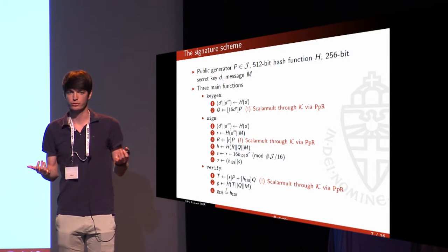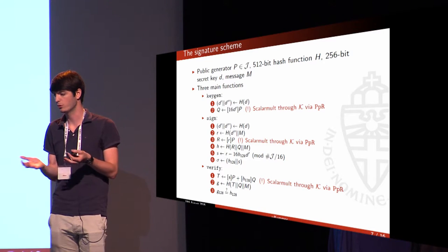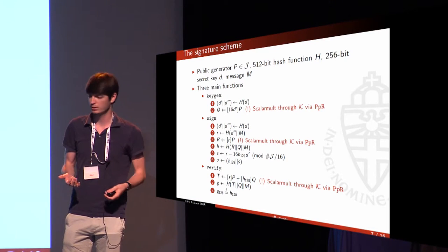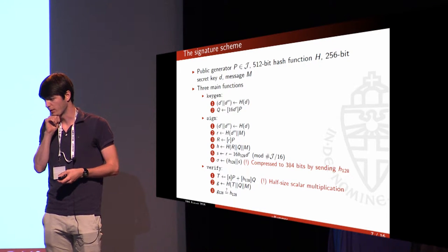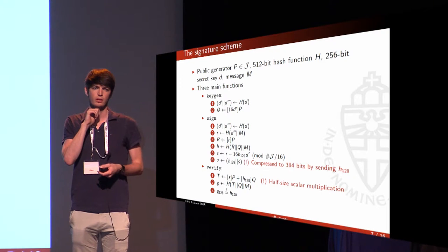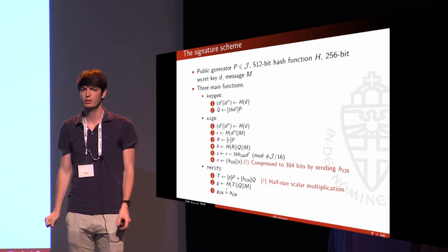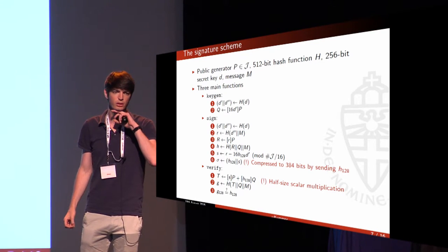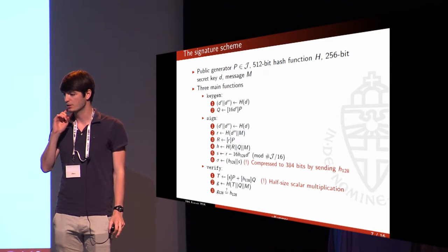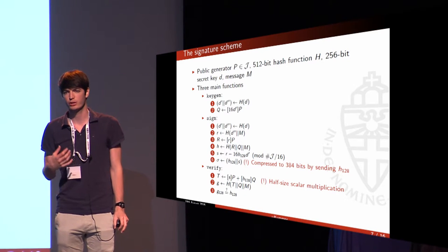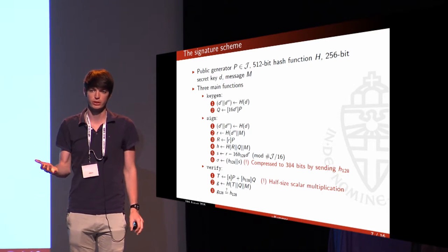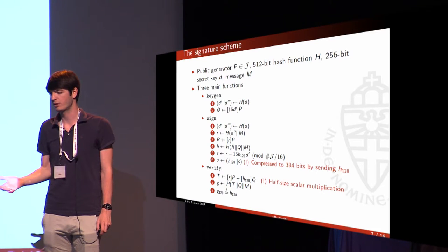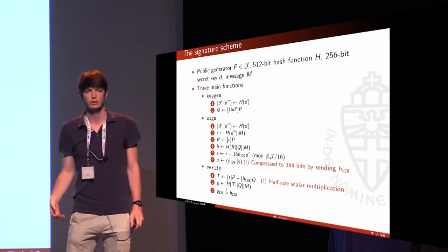But the actual work is still done through the Kummer — it looks like operations are going on in the Jacobian, but underneath we are mapping down to the Kummer, doing the hard work there, and then recovering back. By going through the Kummer surface, we lose the opportunity for efficient batch verification. Since we already lose batch verification, we may as well do some optimizations in signature size — instead of sending a point, we send a hash of the point, which reduces our signature size from 512 bits to 384 bits, and gives some speed optimizations in verification.